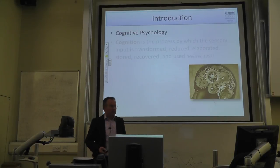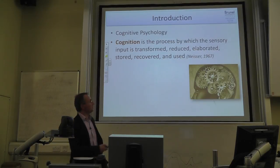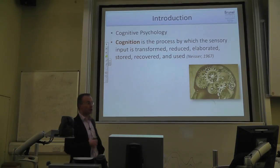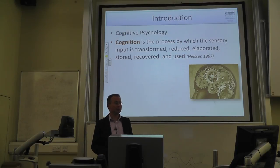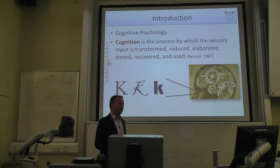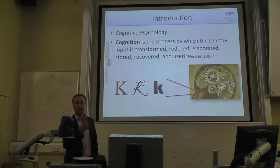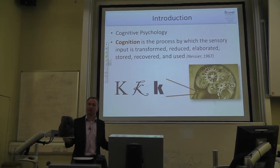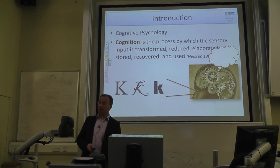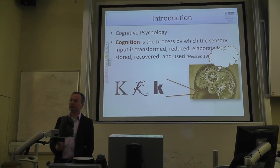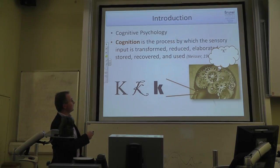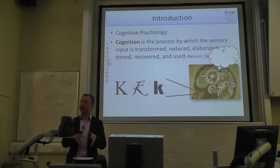The first textbook on cognitive psychology was written by Ulrich Neisser in 1967. He defined cognition as the process by which sensory input is transformed, reduced, elaborated, stored, recovered, and used. Suppose you see three different stylistic versions of the letter K. First, you recognize all three represent a K — you transform and reduce information from different abstract shapes into a more general representation.